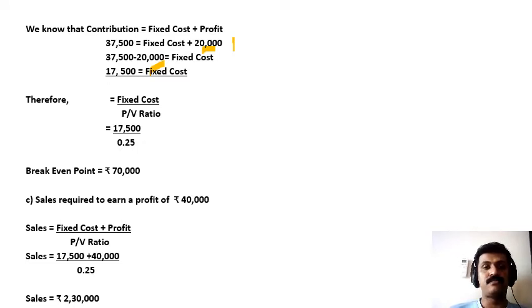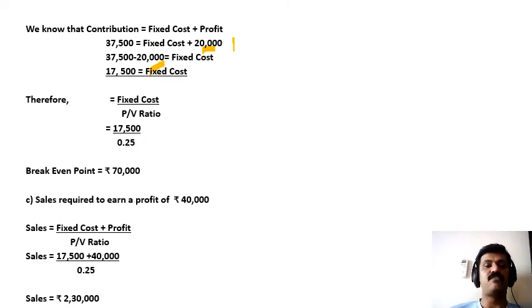Therefore, breakeven point is equal to fixed cost divided by PV ratio. Fixed cost 17,500 divided by PV ratio 0.25. So we will get the value of breakeven point as rupees 70,000.